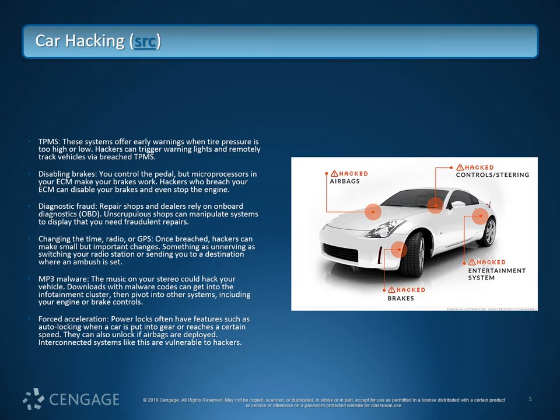Car hacking is not quite as dramatic as sci-fi suggests, but there are real concerns. The TPMS — tire pressure monitoring system — which normally warns when pressure is too high or too low, can be used by hackers to track your location, since it can be interconnected with GPS. Hackers can also trigger warning lights to cause someone to stop at a shop they control, gaining physical access to the vehicle while it's being checked out.